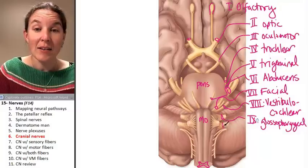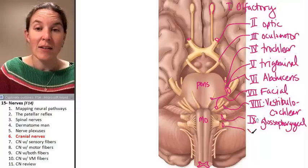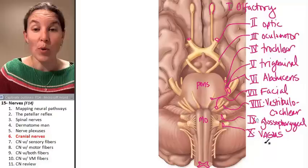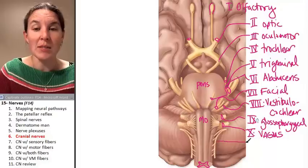Ten. Ten is a big one. Vagus. Not spelled like the town. I probably will notice that and take off points.